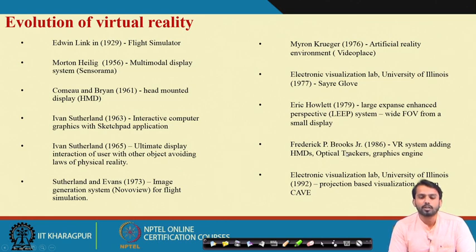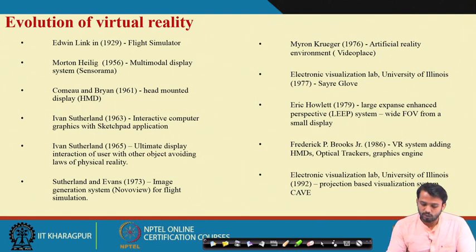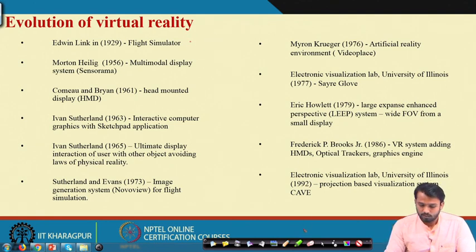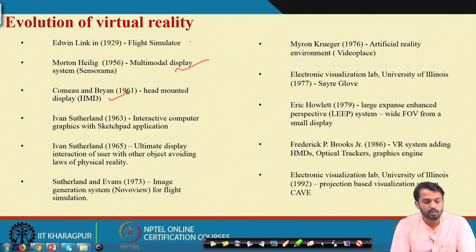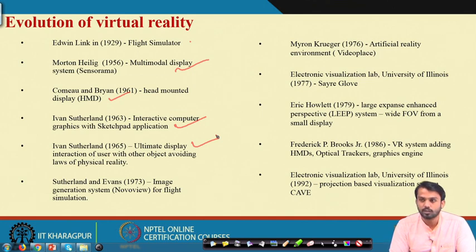Let us see how virtual reality evolved over time. It started with the invention of the flight simulator by Edwin Link in 1929. Then Morton Heilig invented the multi-modal display system called the Sensorama. Next was the invention of the head mounted display by Comeau and Brand in 1961. Then Ivan Sutherland invented interactive computer graphics with the Sketchpad application, and went on to invent the ultimate display — interaction of user with objects while avoiding loss of physical reality — in 1965.